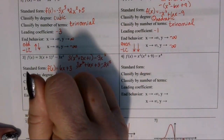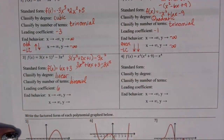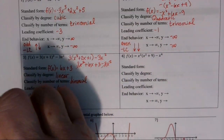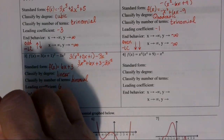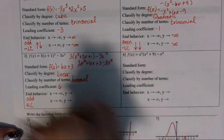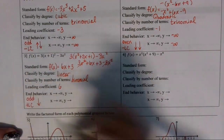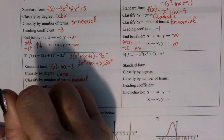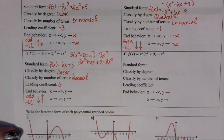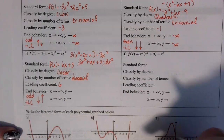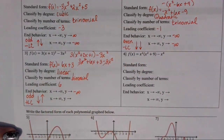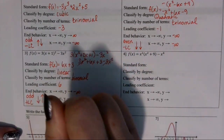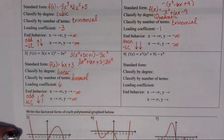This is a linear binomial because the degree is 1 and there are 2 terms. The leading coefficient is 6. The degree is odd, and a positive leading coefficient means that the graph goes down on the left and up on the right. So as x approaches negative infinity, y is headed down to negative infinity, and as x approaches positive infinity, y is headed up to positive infinity.